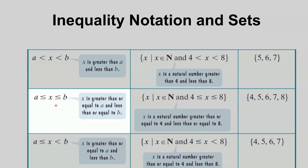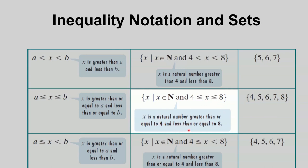If you have the equality symbols on both sides, it becomes x greater than or equal to a and less than or equal to b. The set of all x such that x is in N and x is greater than or equal to 4 and less than or equal to 8 contains natural numbers from 4 through 8. Using the roster method: 4, 5, 6, 7, and 8.